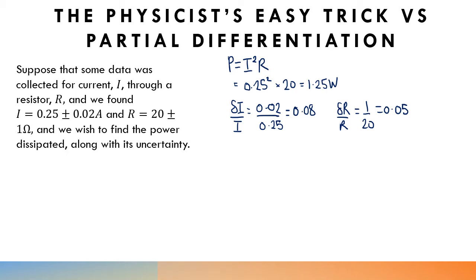And in physics then what you're told is that you just add together the fractional errors. So you've got that the fractional error in the power, delta P over P, is going to be equal to delta I over I plus delta R over R. And because I is in there twice, because you can think of this as I times I times R, then we have to put a 2 in front of that.